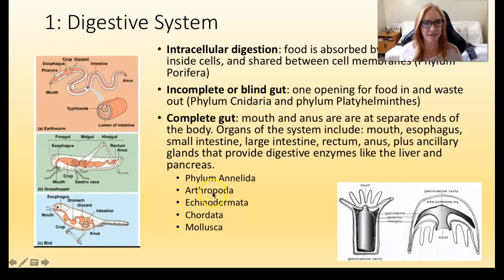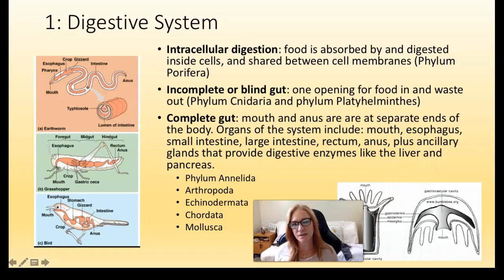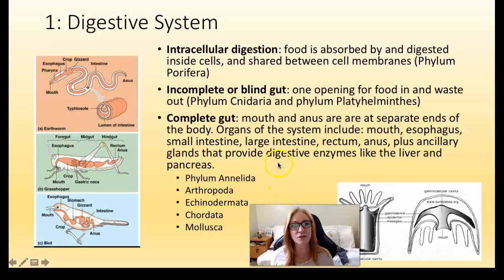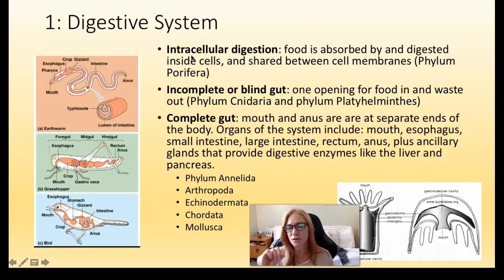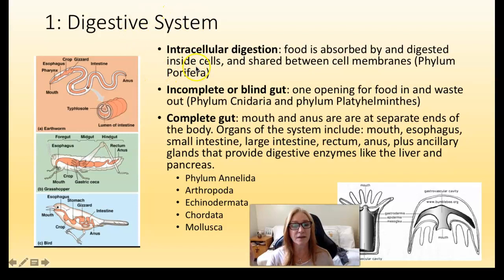First, the digestive system. Animals eat — one of the characteristics of the animal kingdom is they are heterotrophic, so they have to eat food and extract the nutrients and energy from it. That digestion and absorption is achieved three different ways. We have intracellular digestion — this happens in the simplest animals, where food is consumed and absorbed on a cellular level, cell by cell, and then the cells share nutrients. This happens in phylum Porifera — they're just cells, not tissues, so they share nutrients cell to cell throughout the whole body.